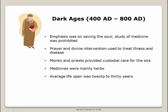The Dark Ages, 400 A.D. to 800 A.D. During the Dark Ages, emphasis was on saving the soul and the study of medicine was prohibited. Prayer and divine intervention were used to treat illness and disease. Monks and priests provided custodial care for the sick. Medicines were mainly herbs. The average lifespan was 20 to 30 years.